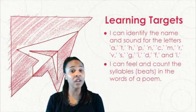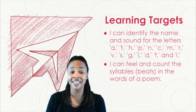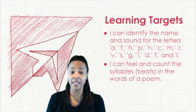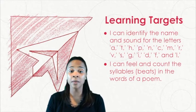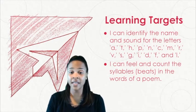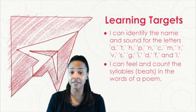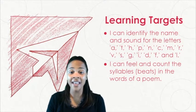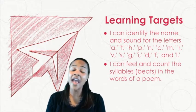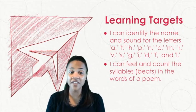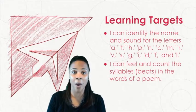There are two learning targets for our lesson today. The first target says, I can identify the name and sound for the letters A, T, H, P, N, C, M, R, S, V, G, I, D, F, and L. And our second target says, I can feel and count the syllables or beats in the words of a poem.